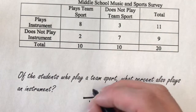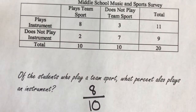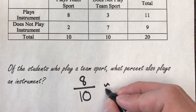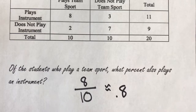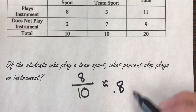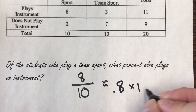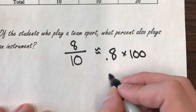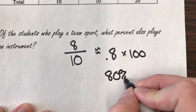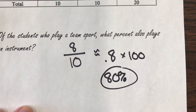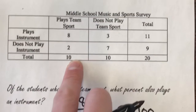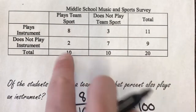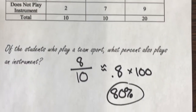8 out of 10 people play an instrument. Turning that into a percent: 8 out of 10 is 0.8. If I want to turn a decimal into a percent, I multiply by 100. And in this case, 0.8 times 100 is 80%. So since I have 10 people who play a team sport and 8 of them also play an instrument, 8 out of 10 is 80%.